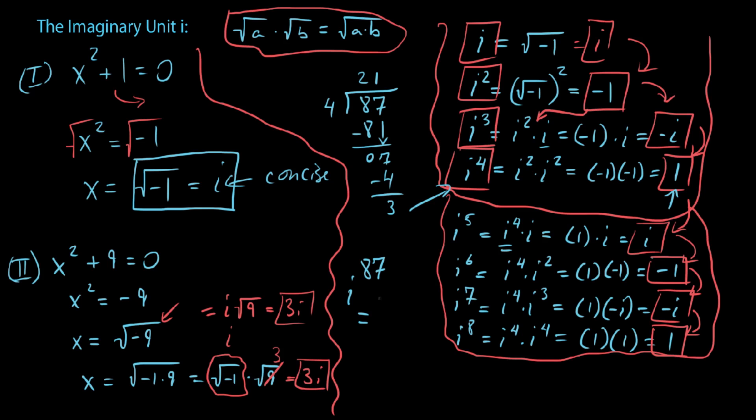We could basically take this i to the 87 and split it up and do i to the fourth times i to the fourth times dot, dot, dot, i to the fourth times i with three of those i's left over. And we would have basically, it looks like up top there, we'd have 21 groups of this. But it doesn't matter because for every i to the fourth, it's just a 1. What we really care about is what is left over. In this case, it's i cubed. So i cubed, we already know about i cubed, it's negative i.